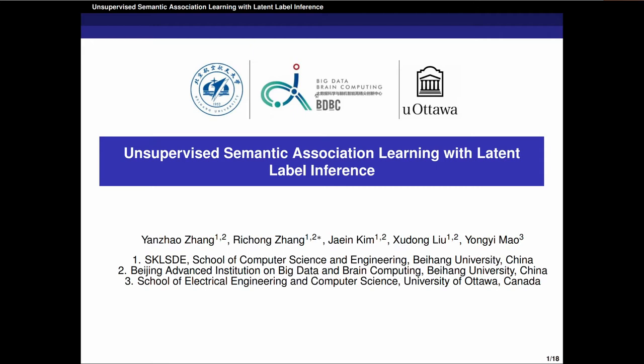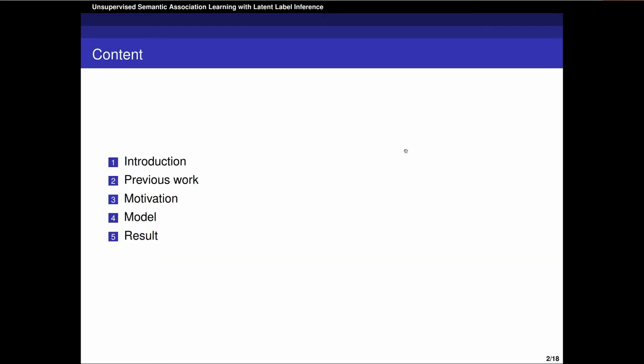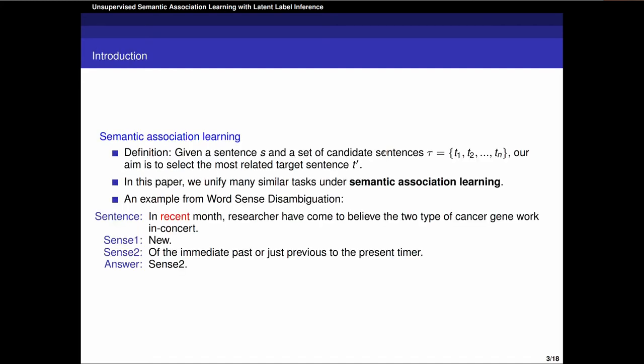Hi everyone, I am a master's student from Beihang University. I am pleased to have this opportunity to make a presentation about our work at the Web Conference 2021. The name of our paper is Unsupervised Semantic Association Learning with Latent Label Inference.